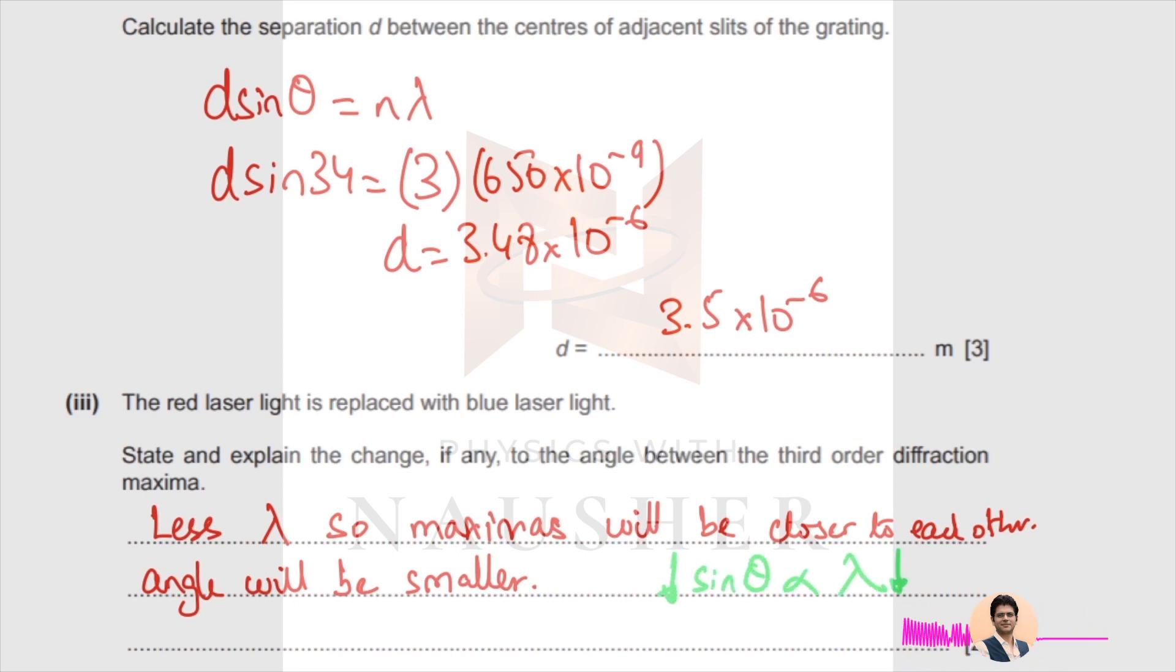If wavelength decreases, your angle will decrease. So when you use blue light, the third order bands will be closer as compared to red light.